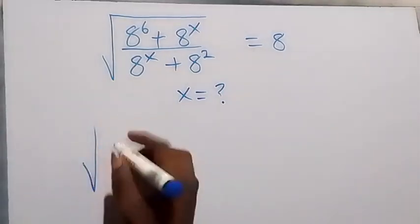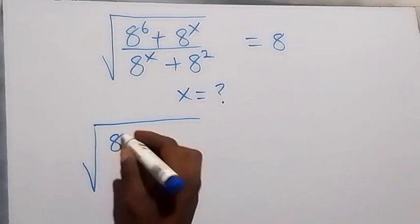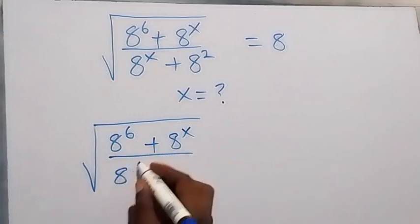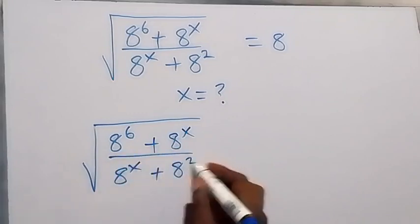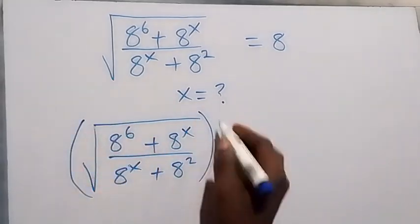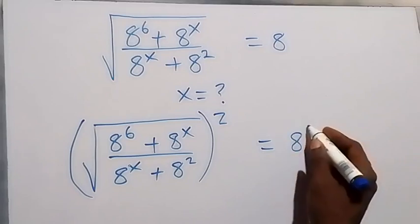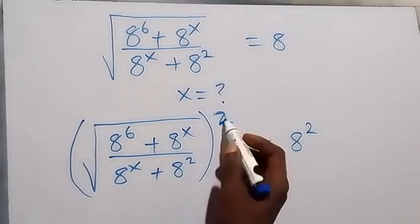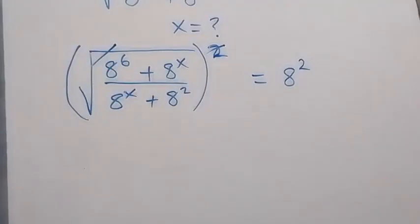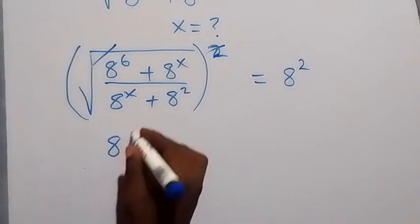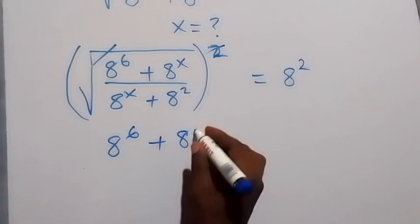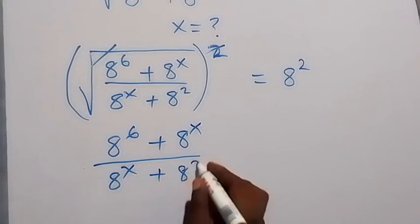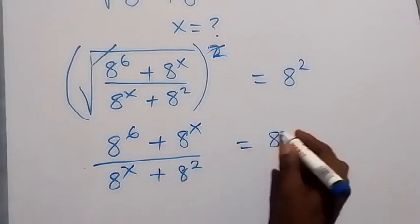From here, we can square both sides. We have square root of 8 raised to the power 6 plus 8 raised to the power x, over 8 raised to the power x plus 8 raised to the power 2. We square this side, equal to here, we square 8 as well — we have 8 squared. The square on this side cancels the square root, and we are left with 8 raised to the power 6 plus 8 raised to the power x divided by 8 raised to the power x plus 8 squared, which is equal to 8 squared.